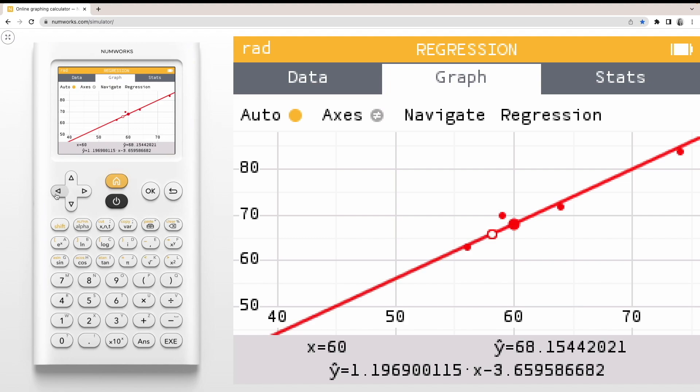Notice, the bottom banner has the X value, predicted Y value, and for linear models, the regression model.